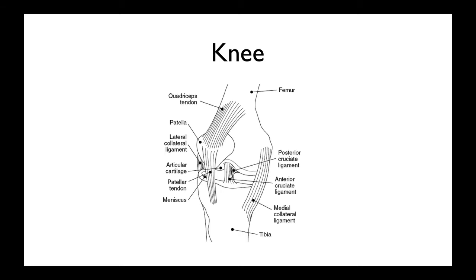The major stabilizers of the knee are the anterior cruciate ligament and the posterior cruciate ligament, which stop the translation of the tibia moving forward and backwards respectively against the femur. Then the medial collateral ligament and the lateral collateral ligaments resist valgus and varus stress on the knee. The patella, quadricep tendon, and patella tendon make up the extensor mechanism, which allows the knee to extend using the quadriceps.